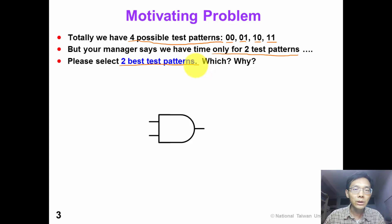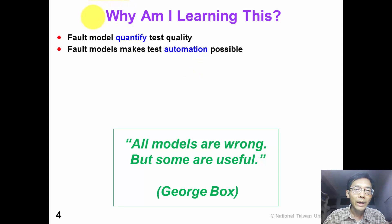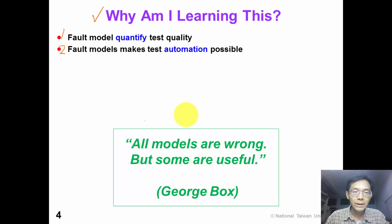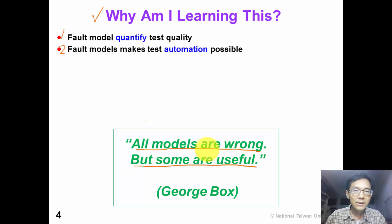To answer this question, we will need fault models. So why am I learning this chapter? The first reason is that fault models provide a quantitative measure for our test quality. The second reason is that fault models make test automation possible. Here is a famous quotation from George Box: all models are wrong, but some are useful. I think this is a suitable quotation for this chapter.